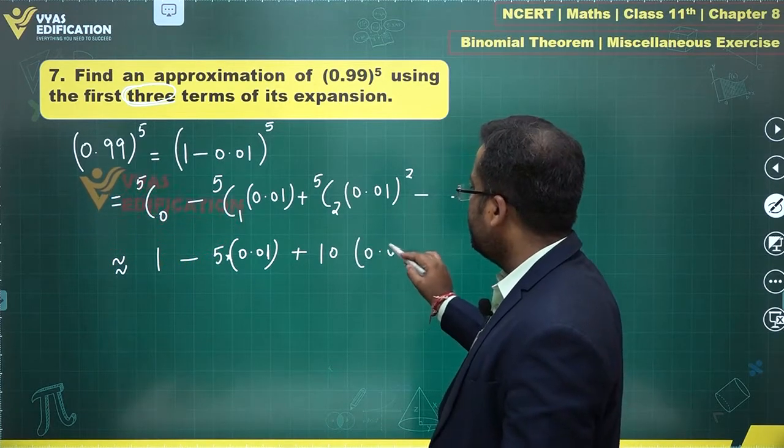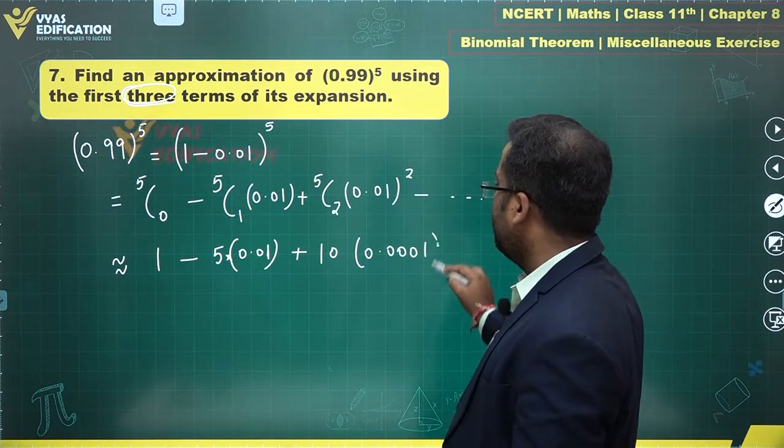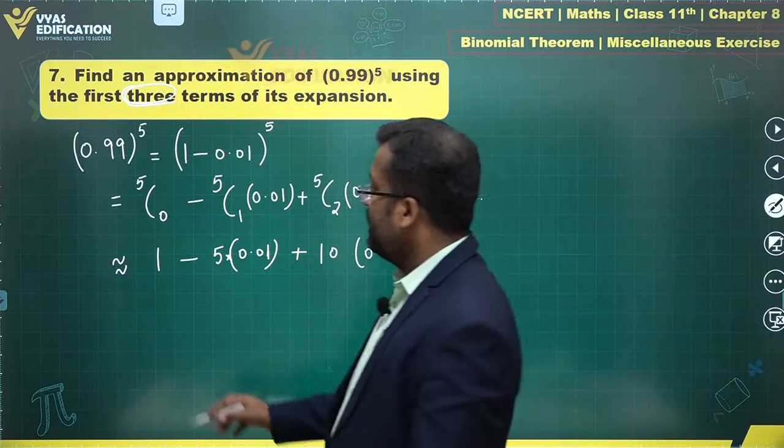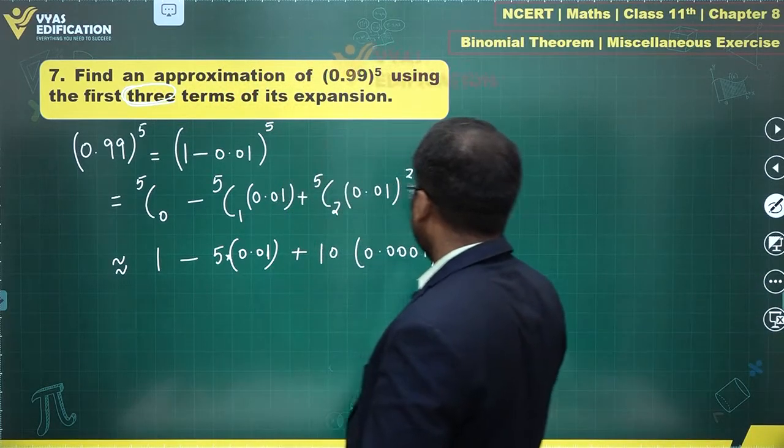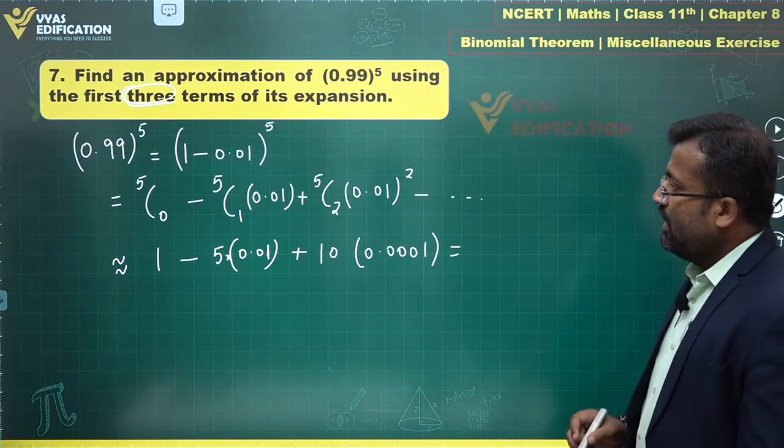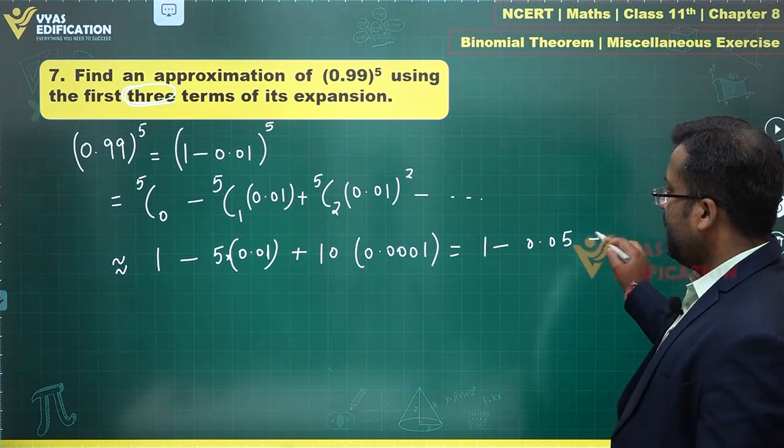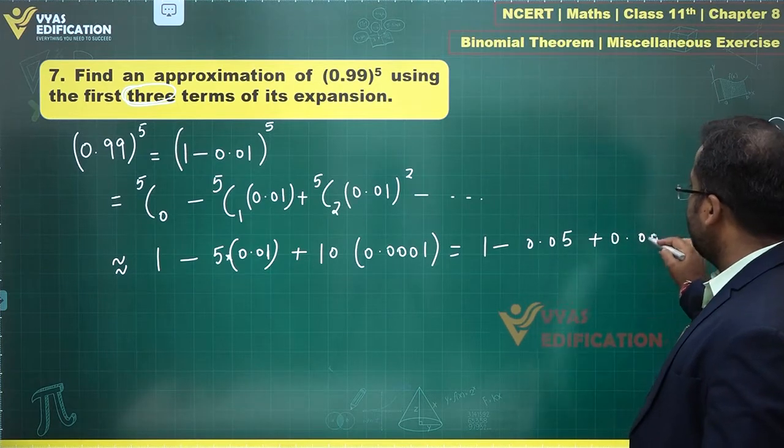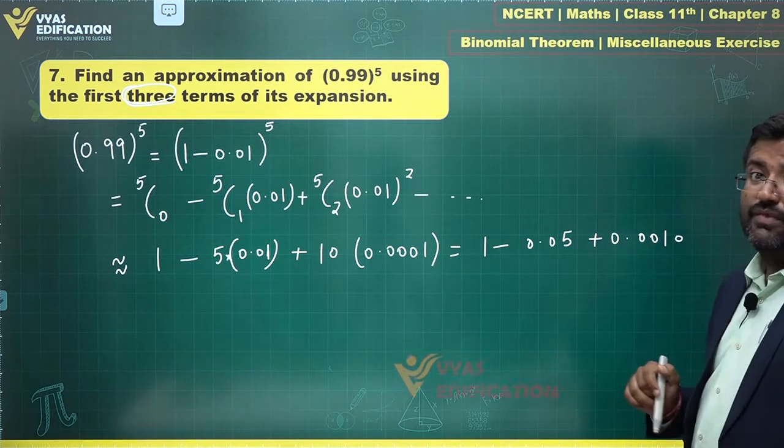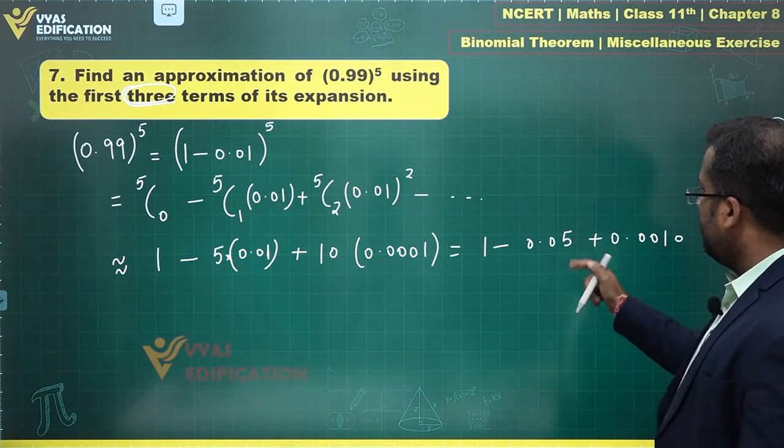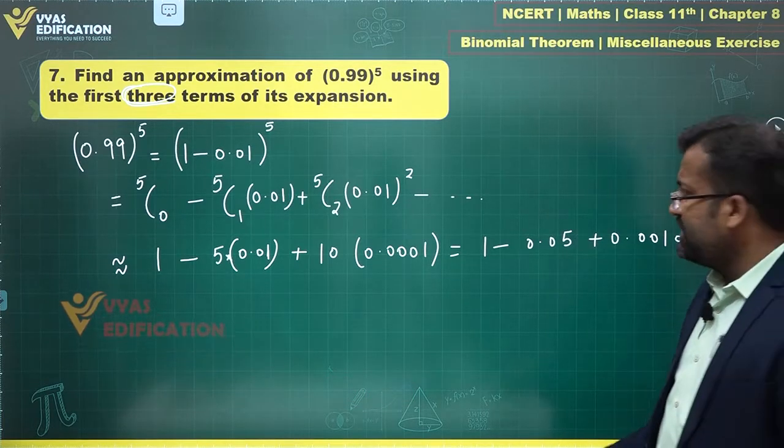What is that? 0.0001. This is the approximate value. This is further equal to 1 minus 0.05 plus 0.0010 is what I get. And let's simplify this. This is 1.001 and 0.050 will be subtracted.